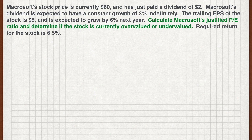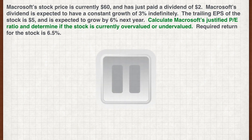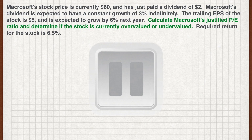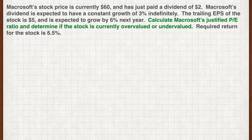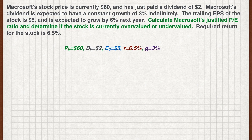The trailing EPS of the stock is $5 and is expected to grow by 6% next year. Calculate Macrosoft's justified P/E ratio and determine if the stock is currently overvalued or undervalued. The required return for the stock is 6.5%. Let's first note down the data we're given: current price is $60, current dividend is $2, current earnings per share is $5, required return is 6.5%.